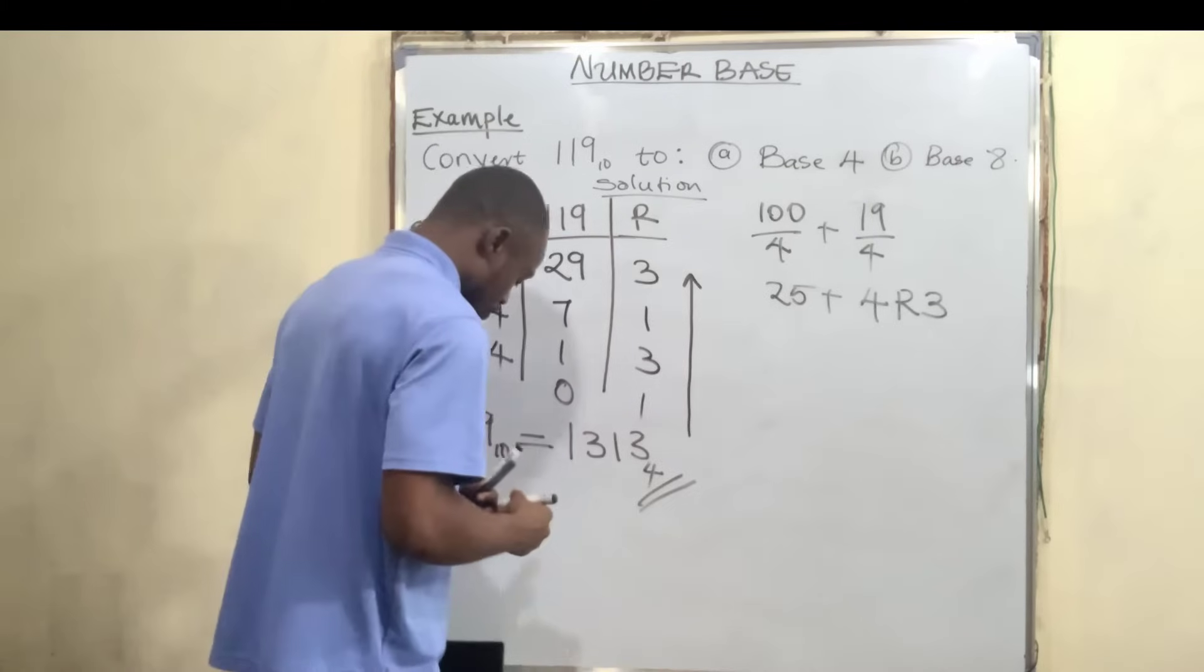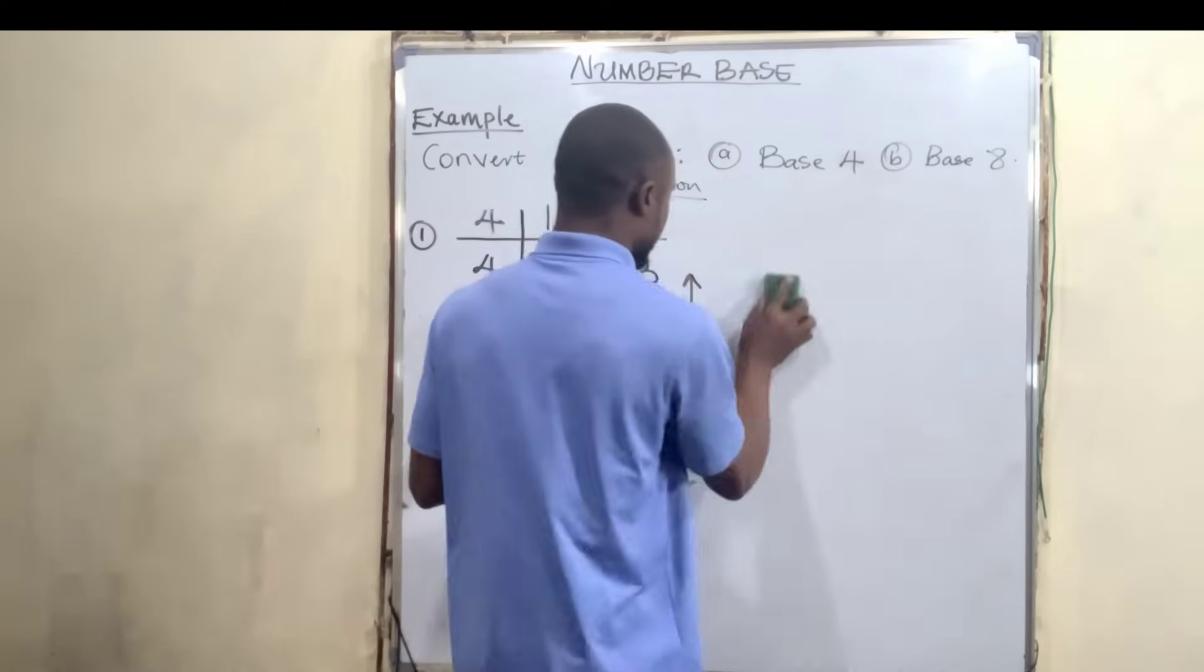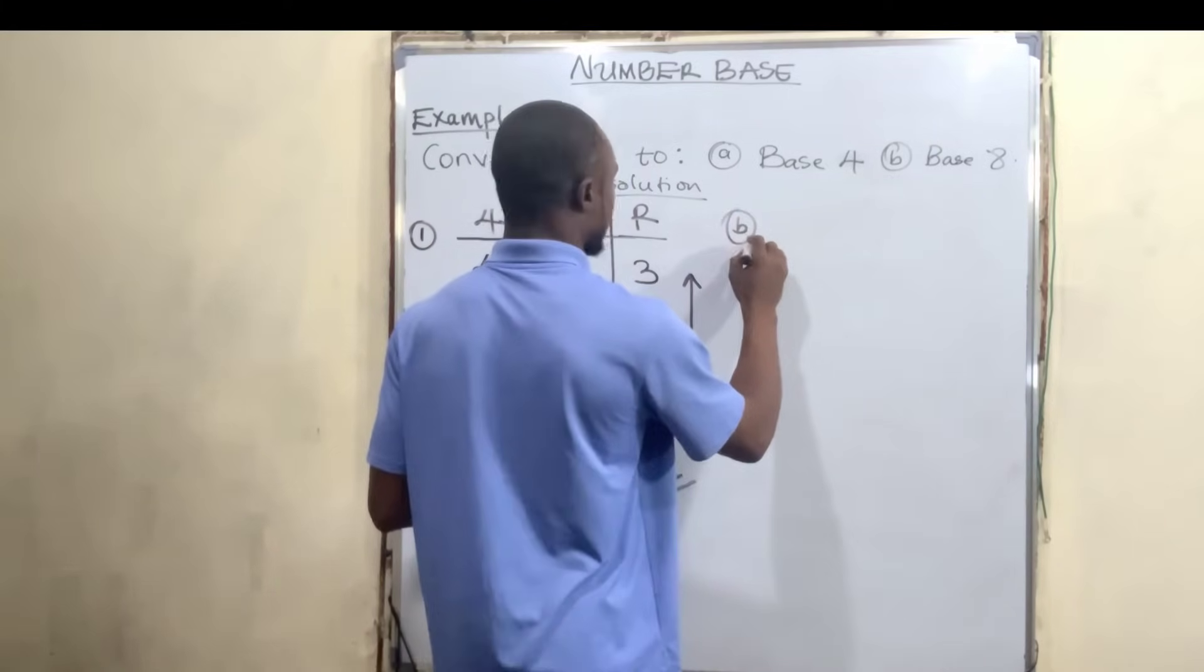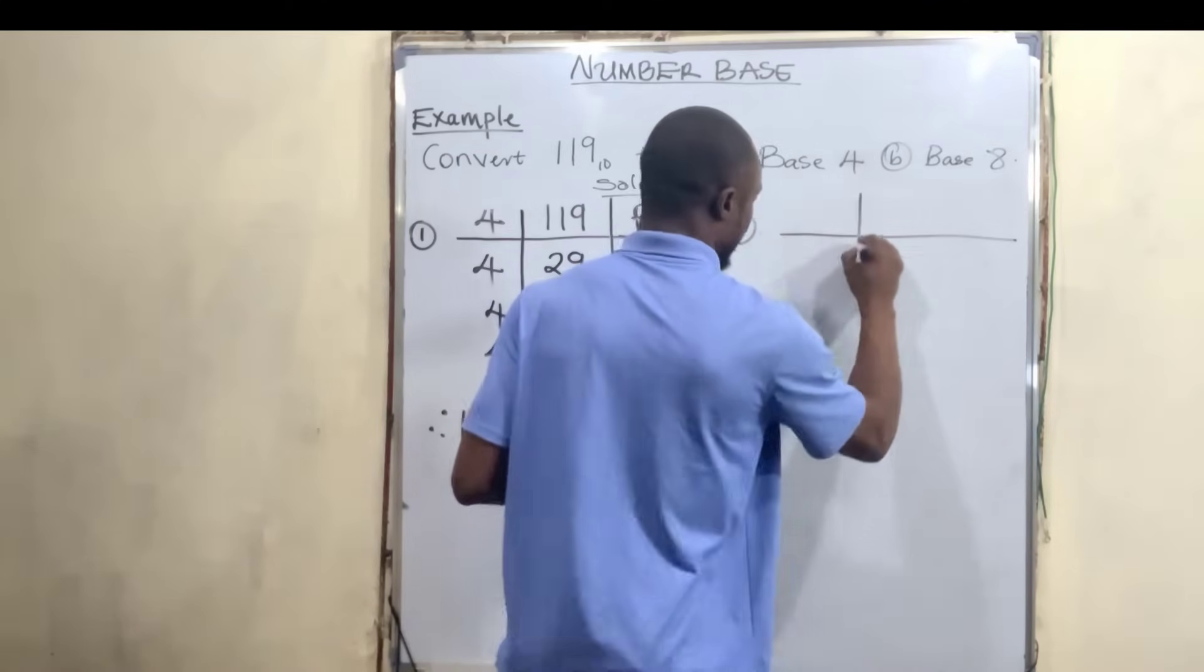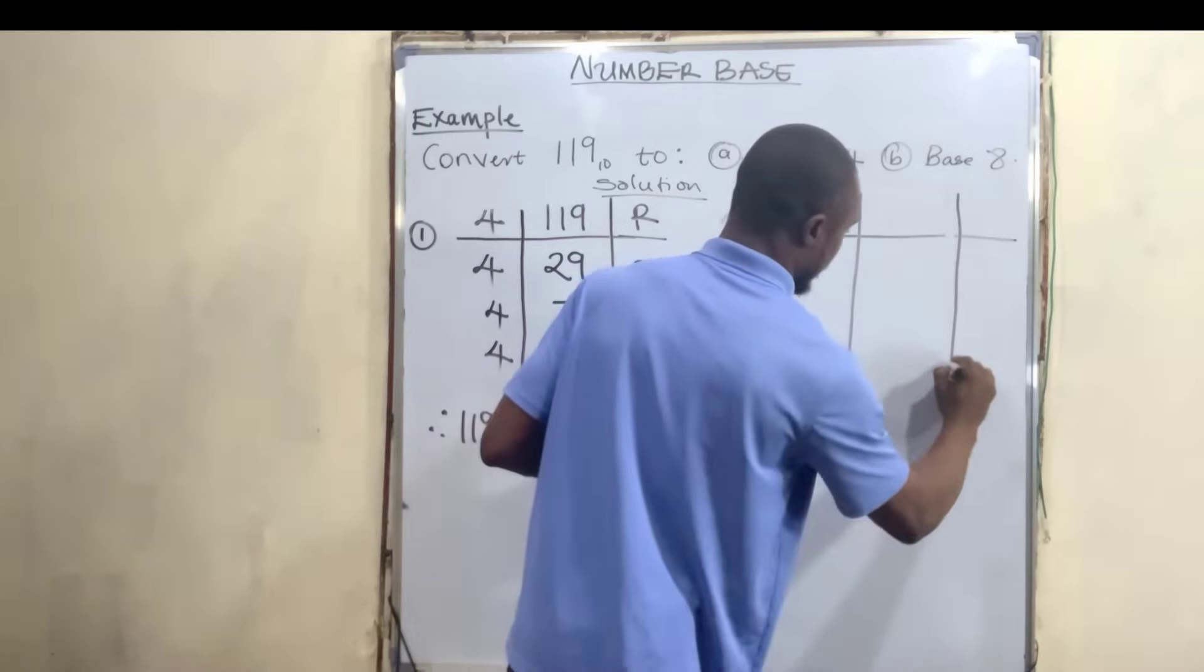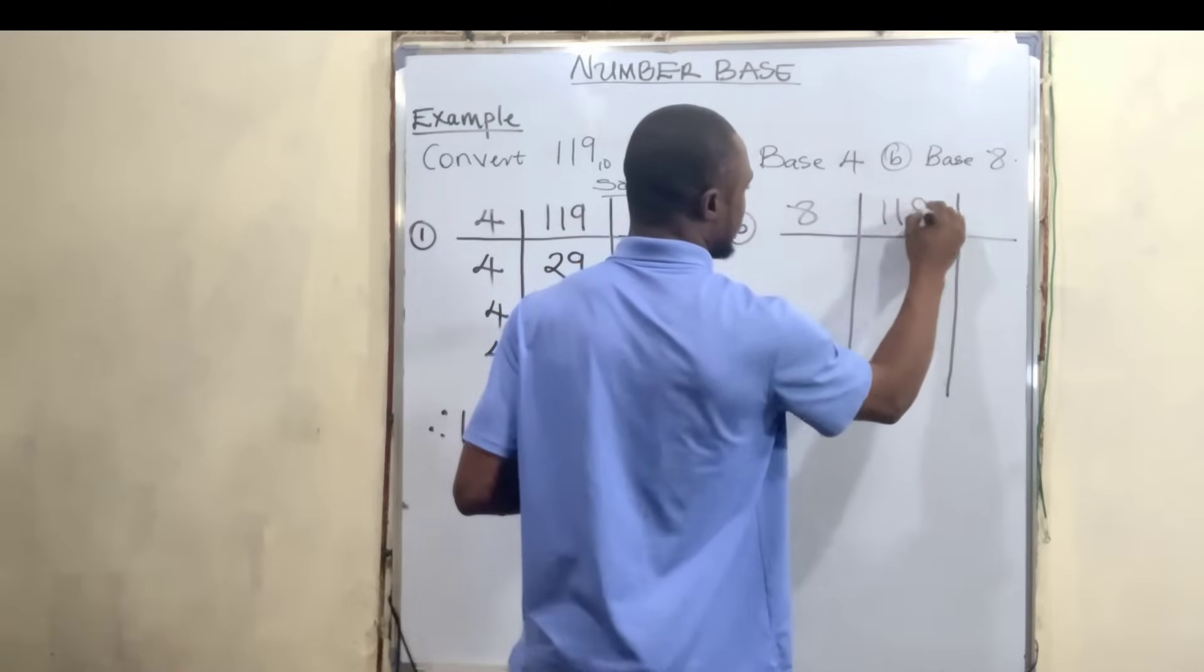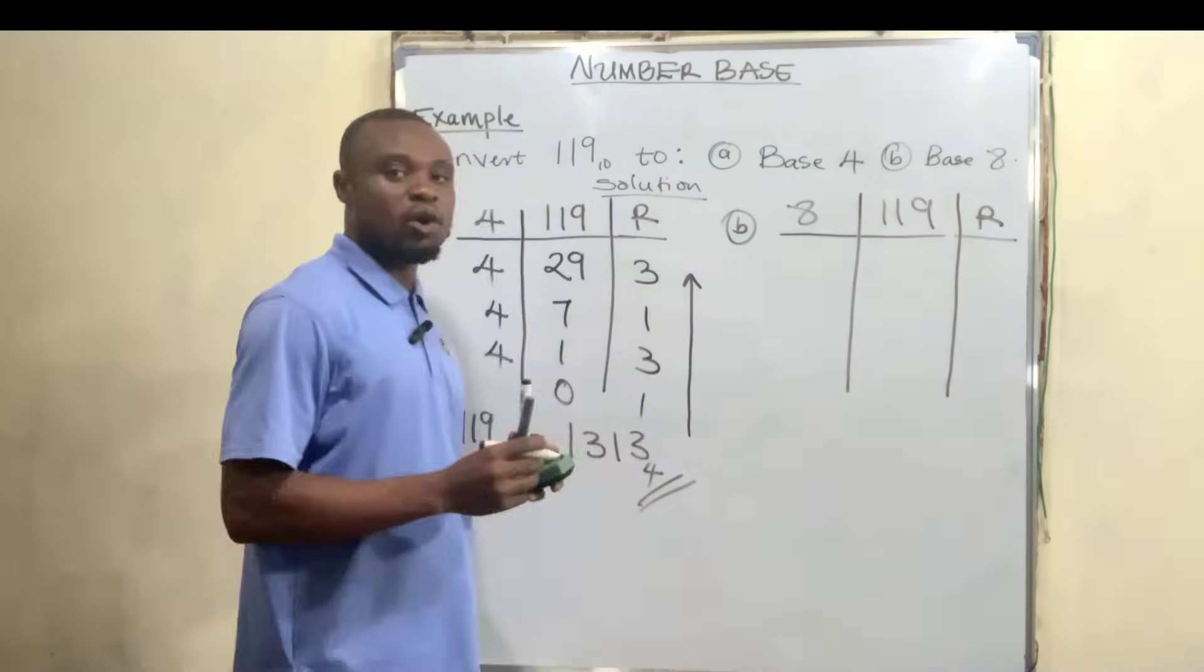The second part of the question, which is part B. Draw the line. Put the new base here, base 8, put the number which is 119, and a remainder here.